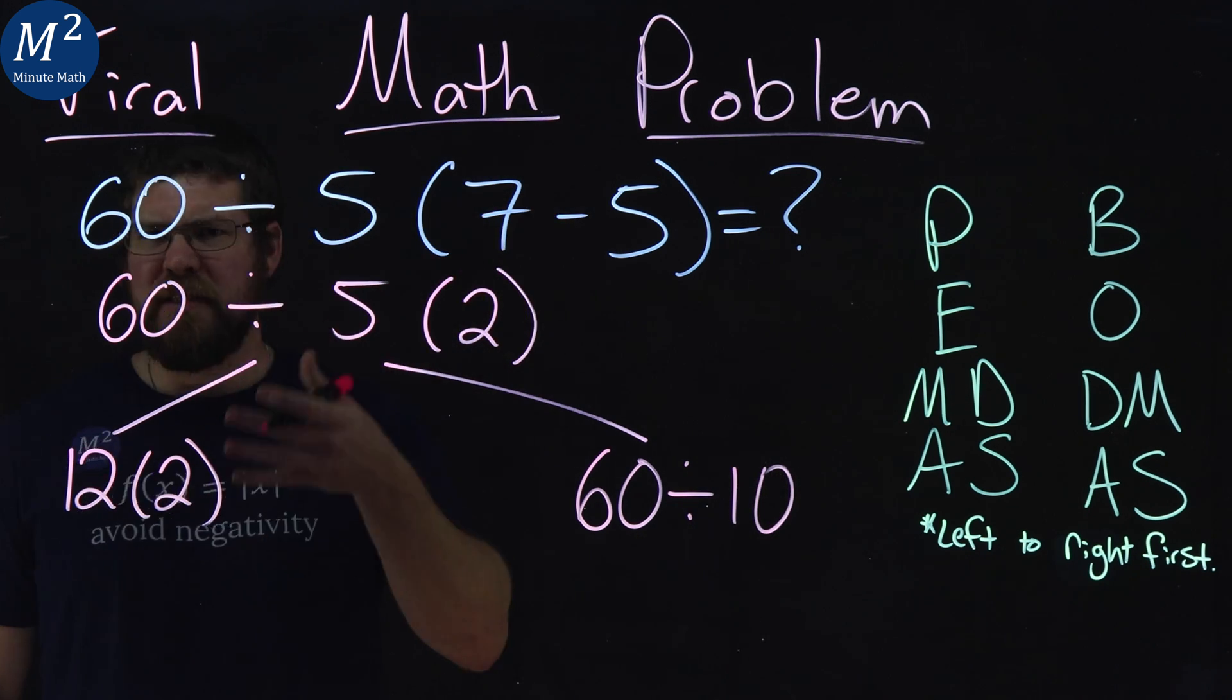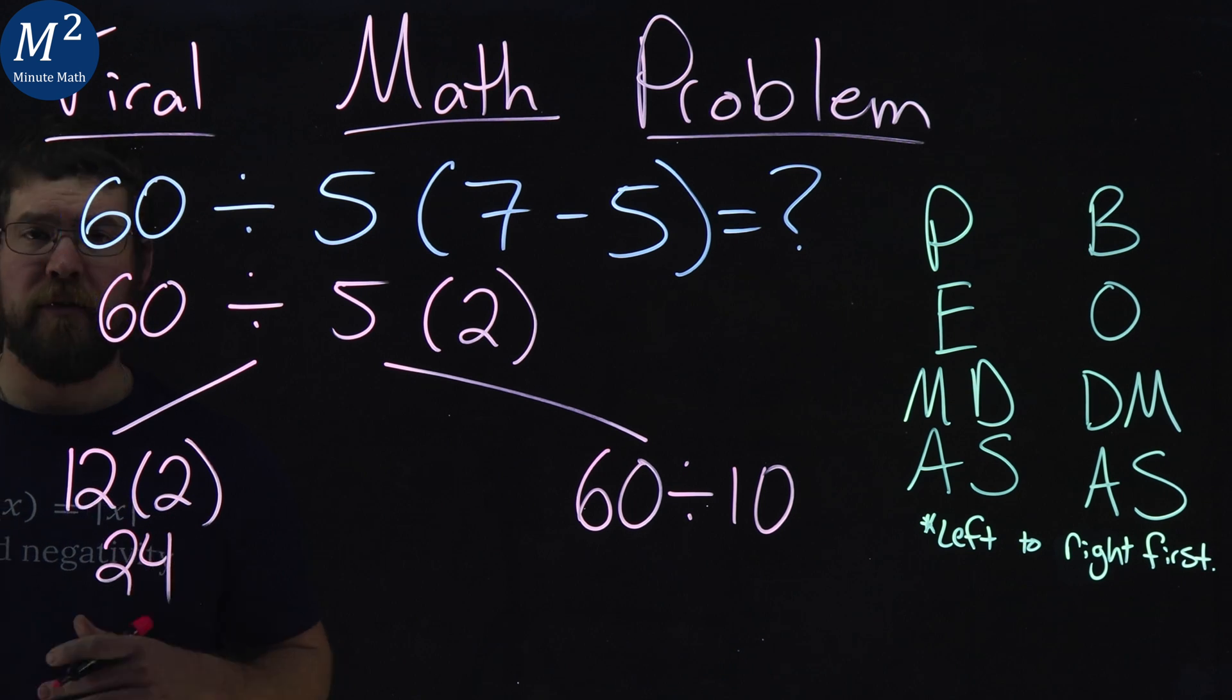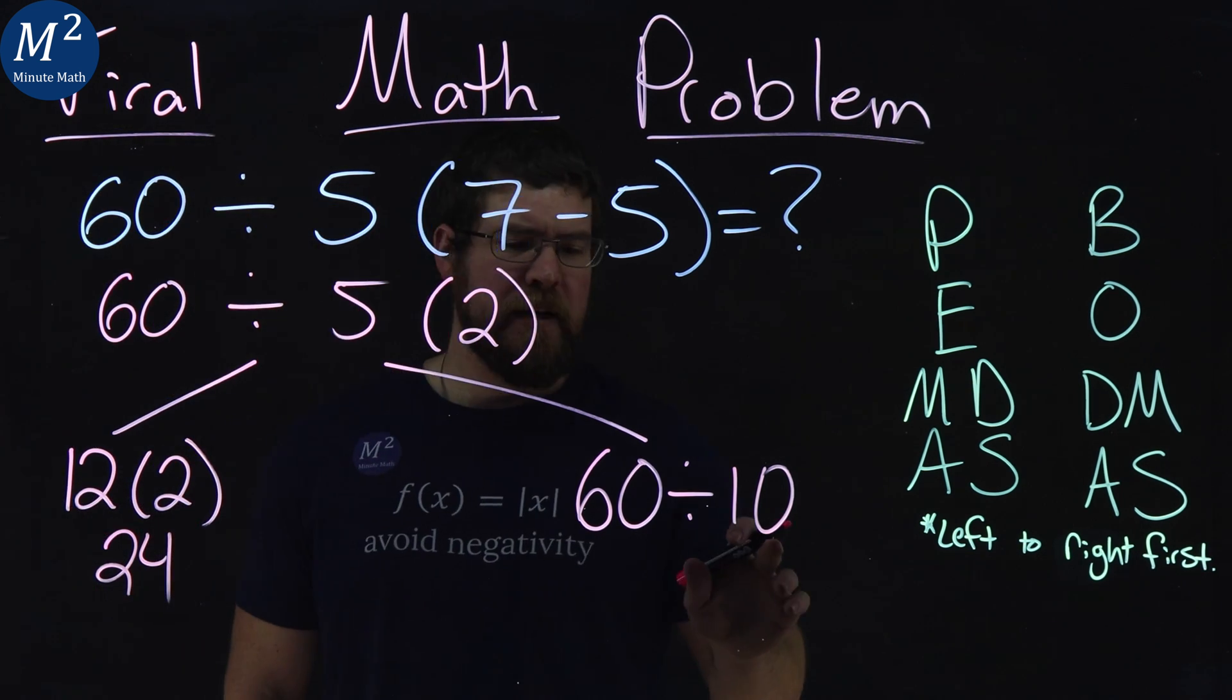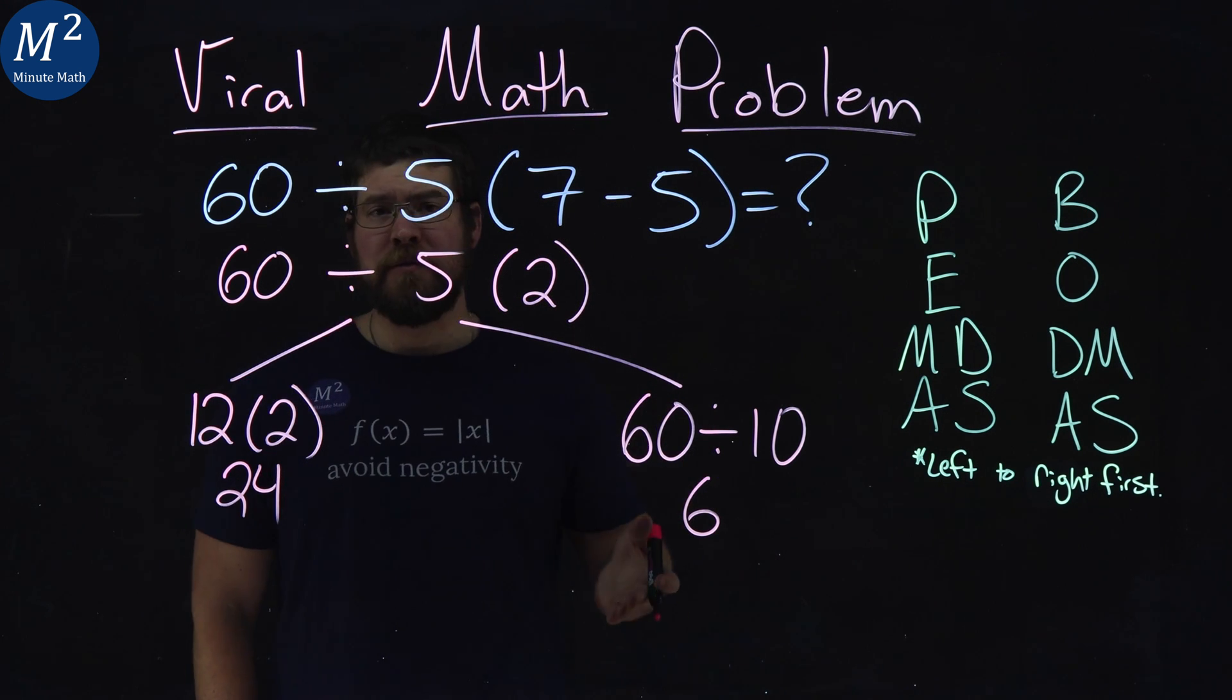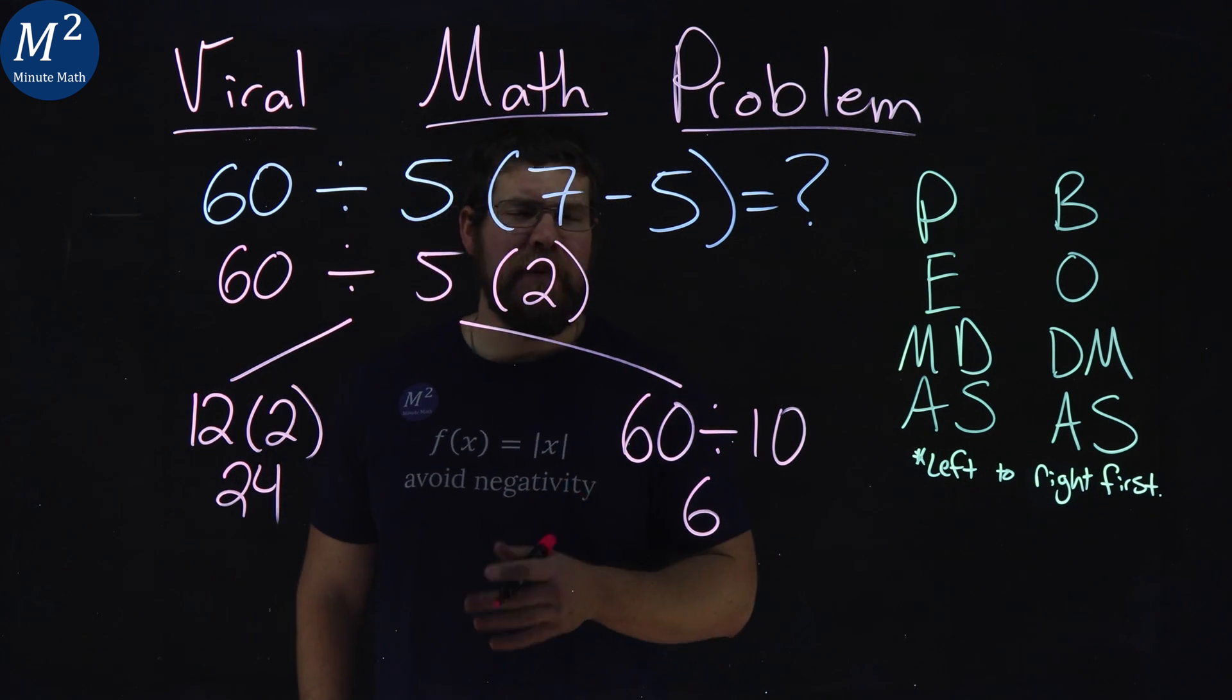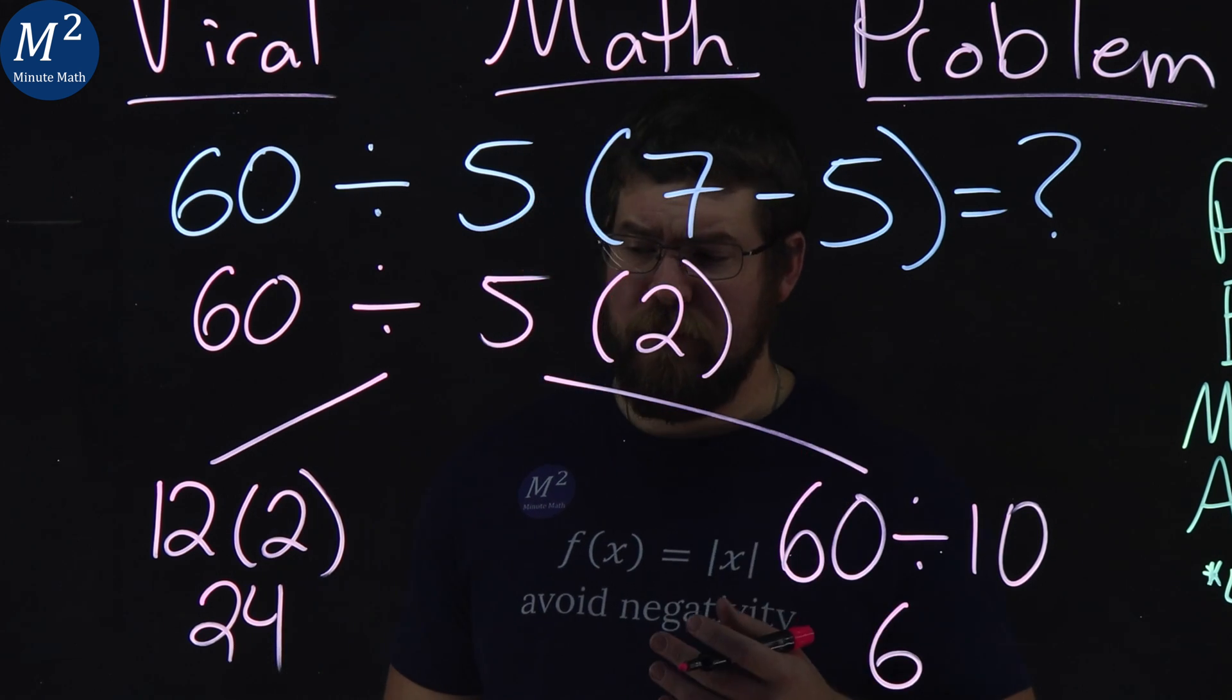And then we're simplifying here. 12 times 2 is 24, no one disagrees with what to do there. And 60 divided by 10 is 6. And so these are the two answers that would be in the comment section most likely below. If you had something else, then you don't know anything about math, to be honest.